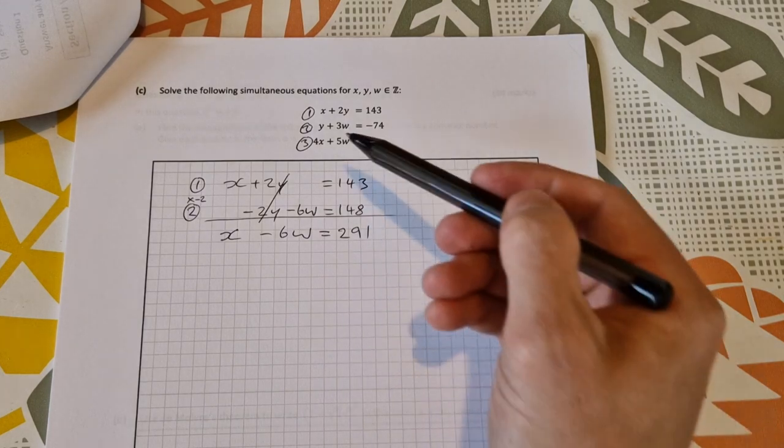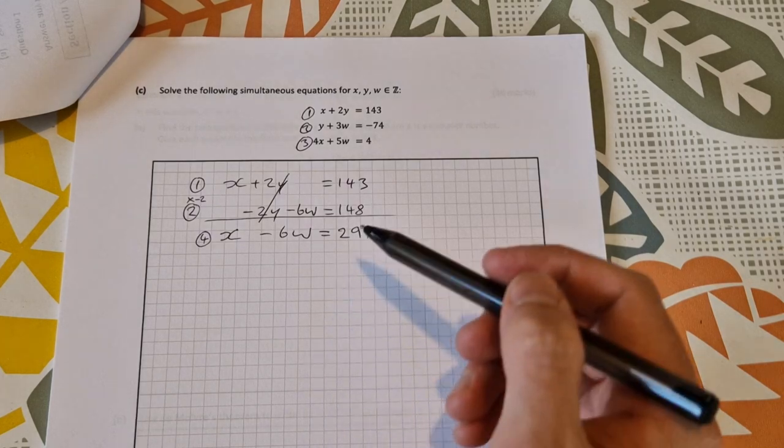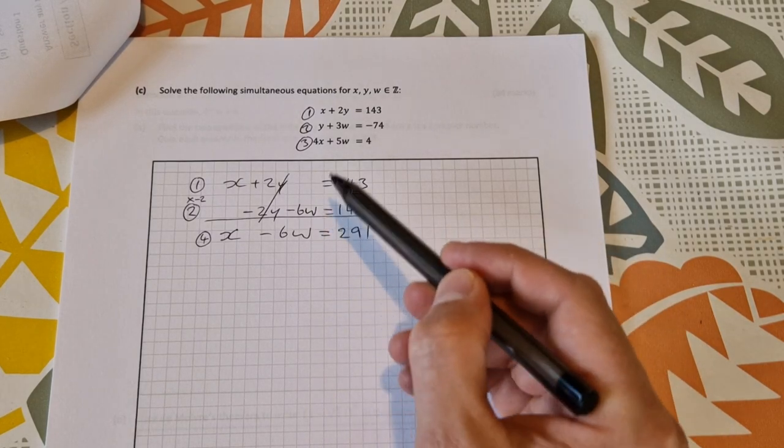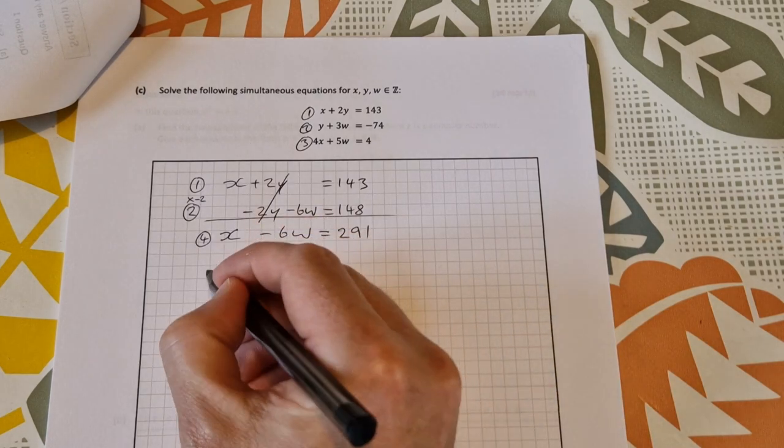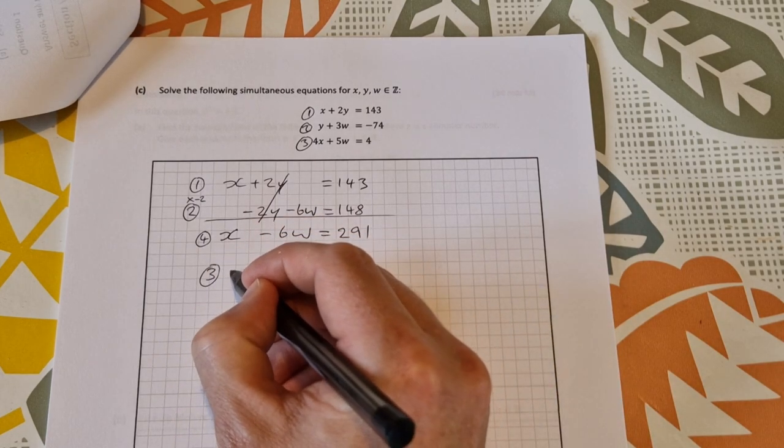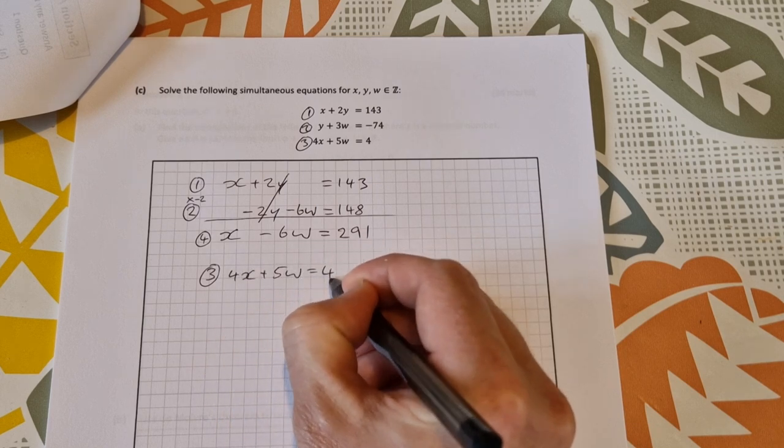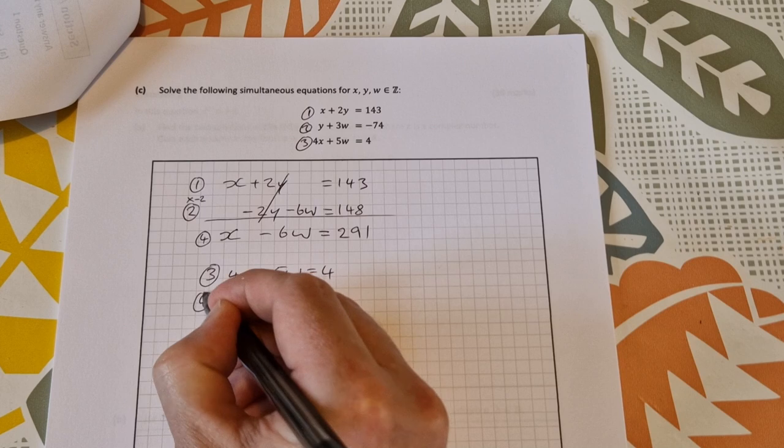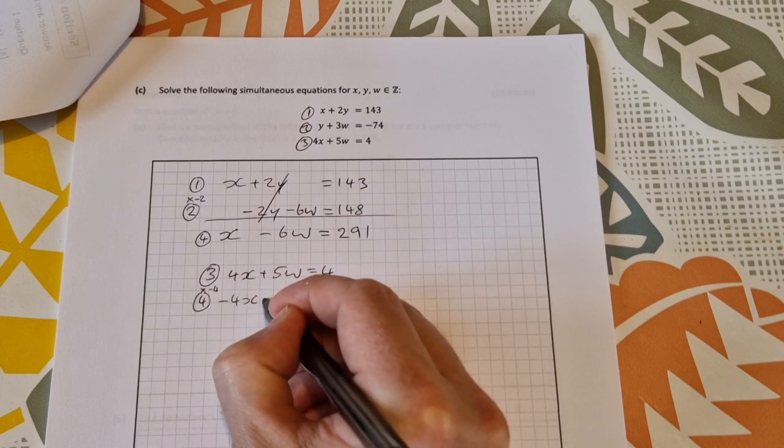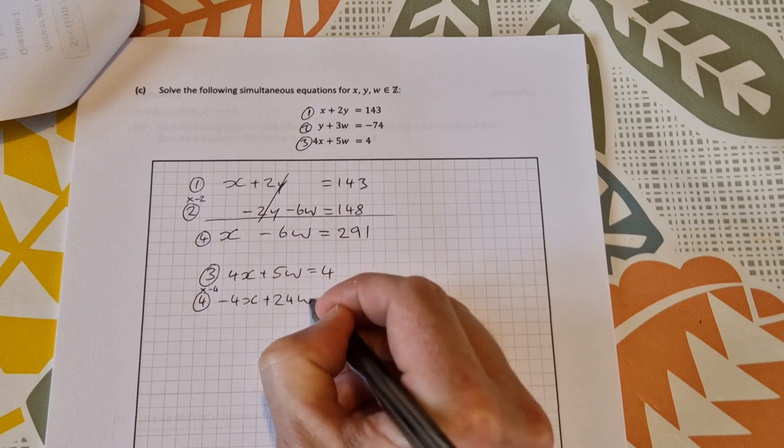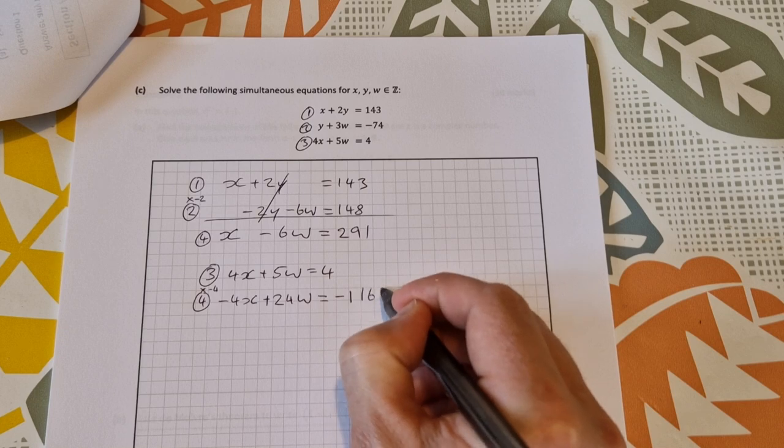From here then I can take equation 3 and this new equation 4 to eliminate the x's if I do equation 3 and then do minus 4 times equation 4. So equation 3 is 4x plus 5w is equal to 4 and equation 4 multiplied by minus 4 is minus 4x, 1,164.